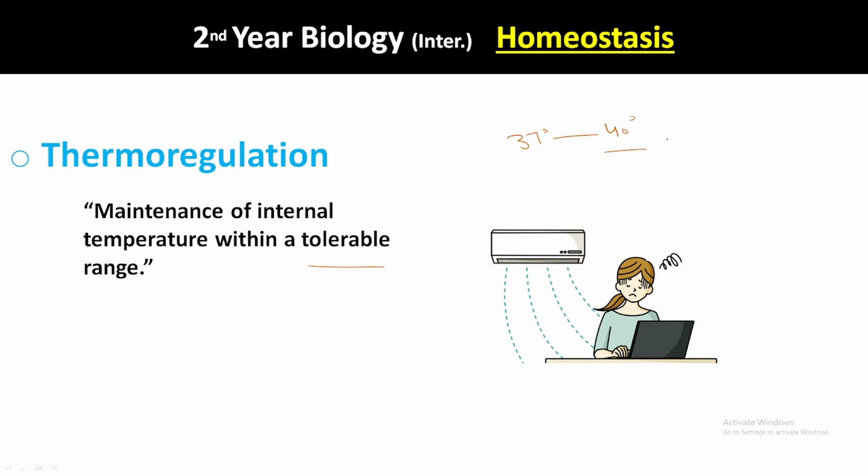The homeostatic process is an evolutionary process. Organisms develop adaptations and acquire mechanisms in their body to bear the environment. For example, older human beings had different adaptations compared to modern humans — there has been a development over time. This evolution in the homeostatic process shows that homeostasis is an ongoing evolutionary process.